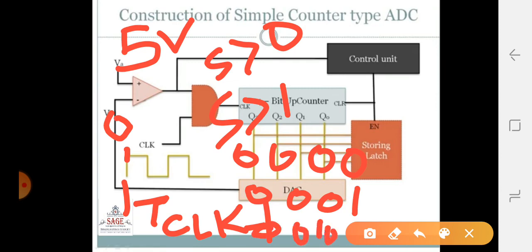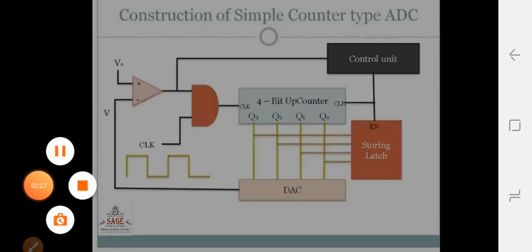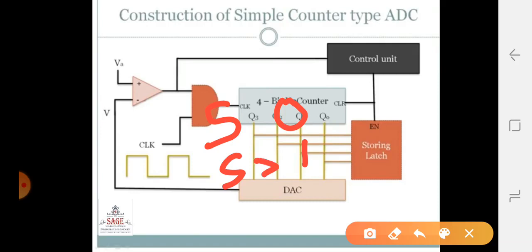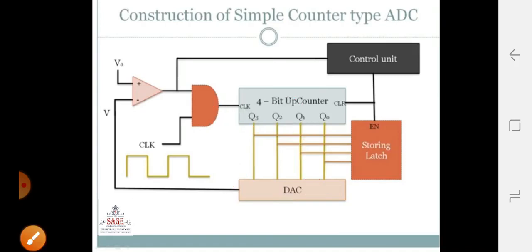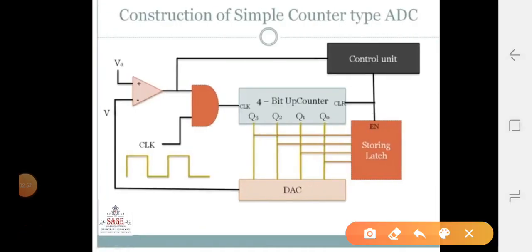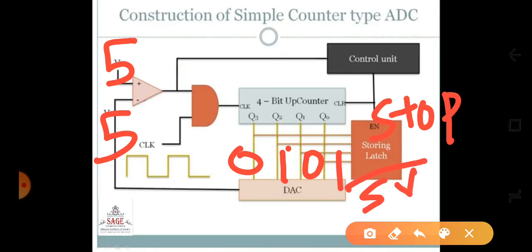The counter increments: 0-0-1-0, and the comparator keeps comparing 5 with each DAC output — 0, then 1, then 2 — continuing the count up to 5. When the counter reaches 0-1-0-1, which equals 5, the control unit will stop and the display will show 5 volts, which is equal to the input voltage.